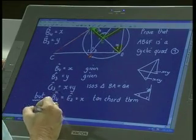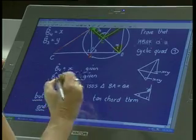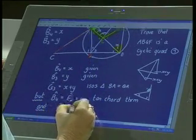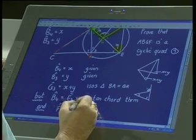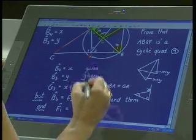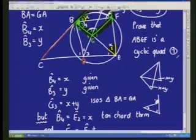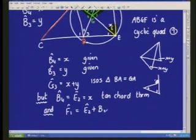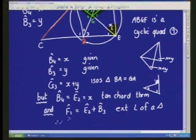Okay, and I hope that you can follow my writing there. Okay, and so now I'm feeding them some more information and I know that F1 is equal to E2 added to back up the top there. If you just remember, that's B3. Because of the exterior angle of a triangle. And so therefore, I know that F1 is also X plus Y.